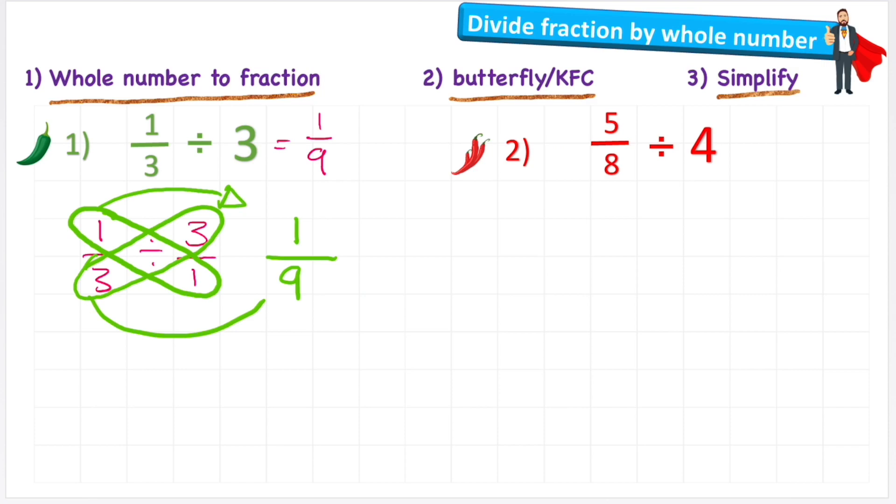Let's quickly look at that with the KFC method. KFC stands for keep, flip, and change. Let's rewrite our question ready. So now I'm going to keep, and that refers to keeping this first fraction. So I'm going to keep it as it is. Then it says flip. So I'm going to flip this fraction around. I'm going to flip it around to one over three. There we go.